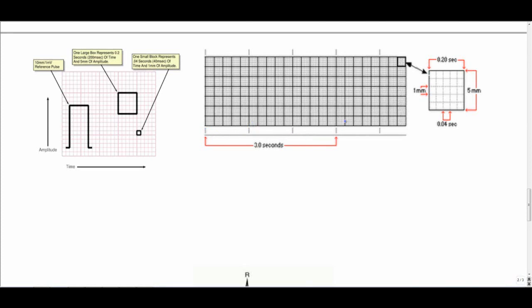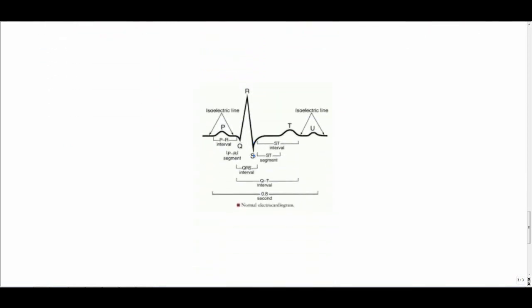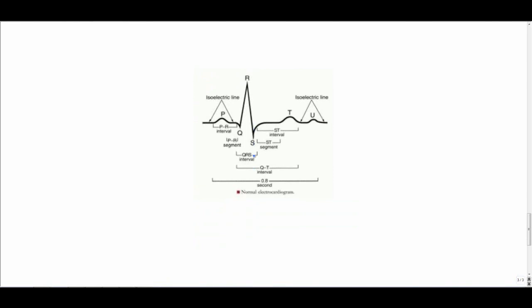Now, every 15 boxes represents a 3 second interval. So, little box represents 0.04 seconds, big box represents 0.2 seconds, and 15 large boxes is 3 seconds.